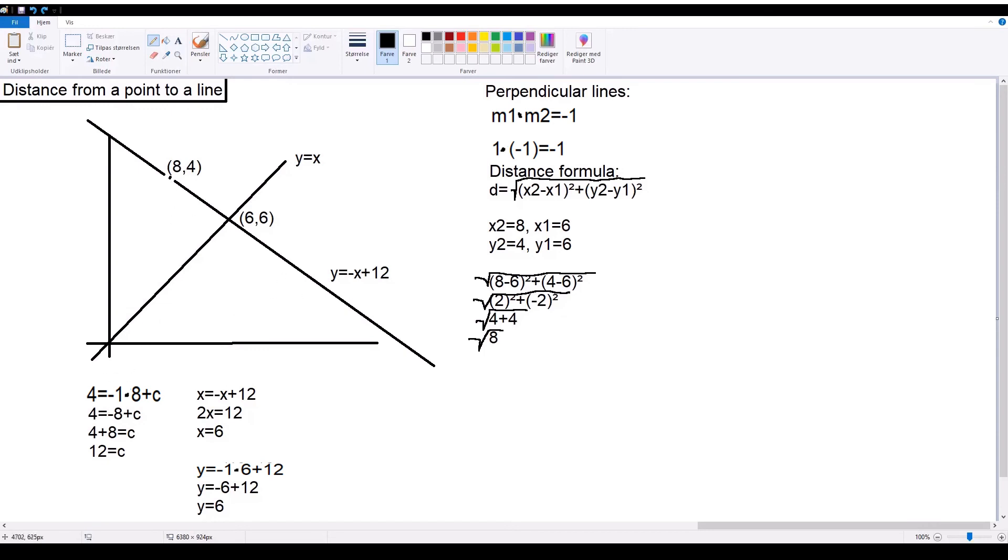Remember that this is actually a negative 1 times x, plus c. Then we just simplify and simplify until we get 12 equals c.